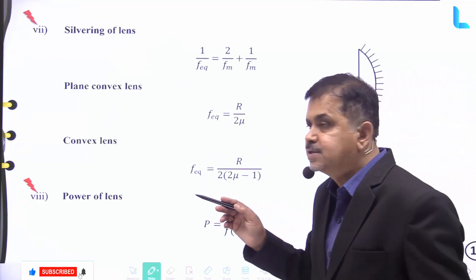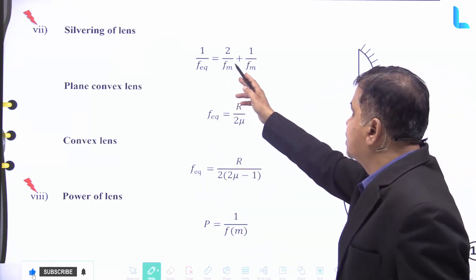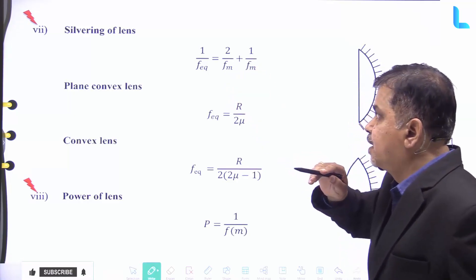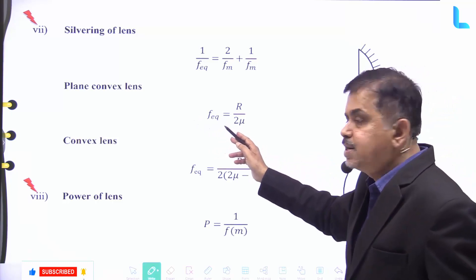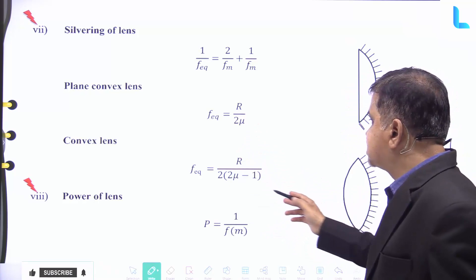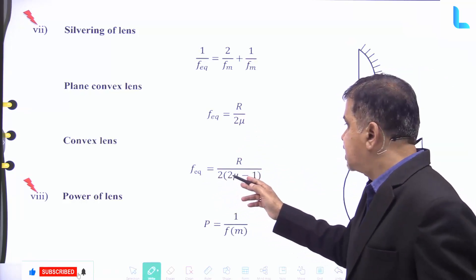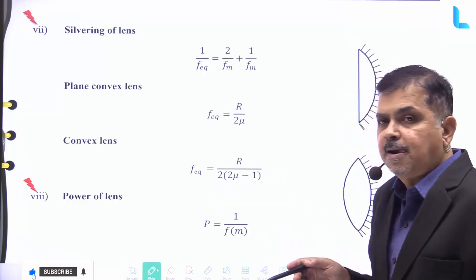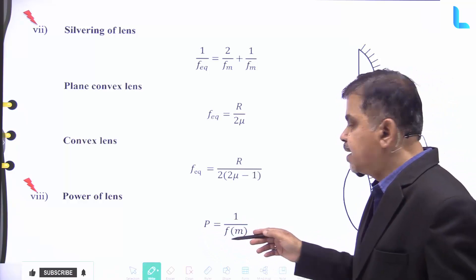For silvering of a lens: 1/f_eq = 2/f_m + 1/f_m. For a plano-convex lens, f_eq = R/f_m. For a convex lens, f_eq = R / [2(2μ−1)]. The power of the lens P = 1/f_m.